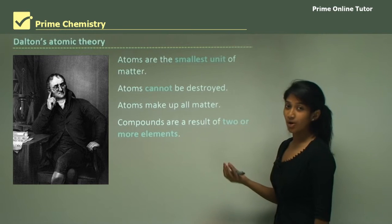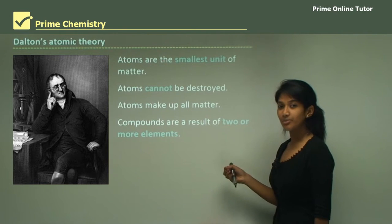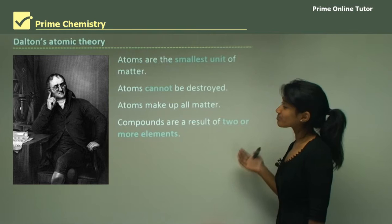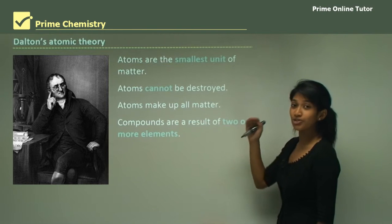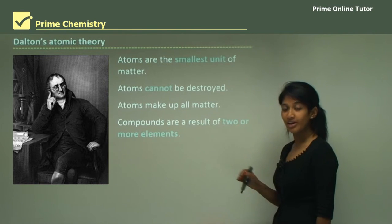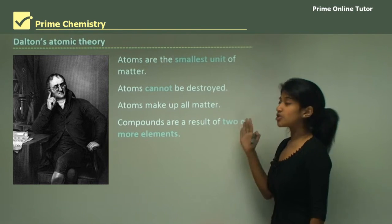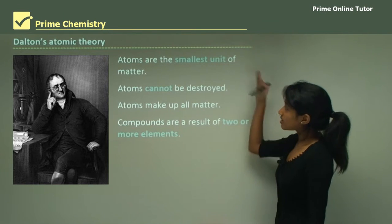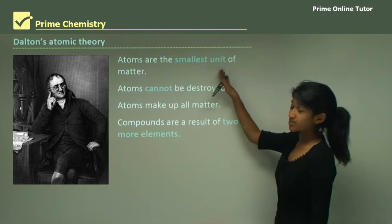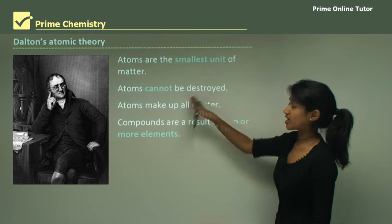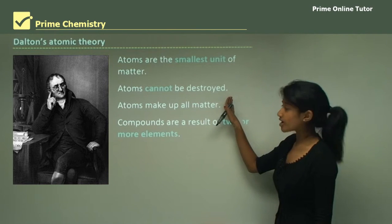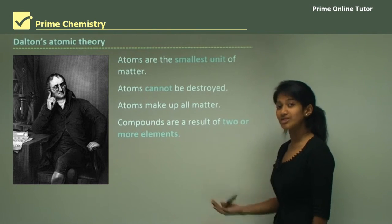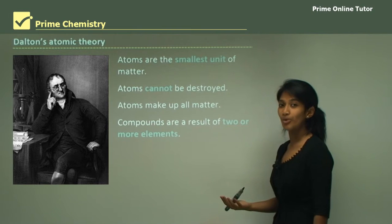With this topic, I would like you to make little summaries for each different scientist we're going to learn about, and make sure it's in chronological order so you don't get mixed up. So our first one was Dalton — very primitive ideas: atoms are the smallest units of matter, they cannot be destroyed, atoms make up all matter, and compounds are a result of two or more elements.